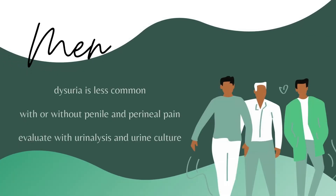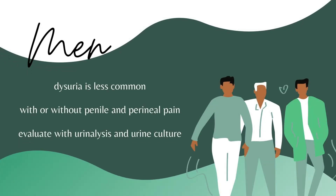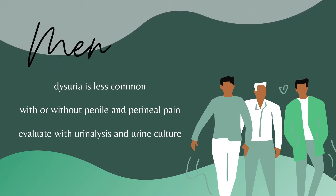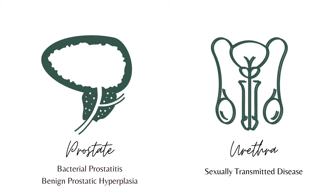In men, dysuria is less common and it occurs with or without penile and perineal pain. Routine lab tests include urinalysis and urine culture. Etiologies of dysuria in men usually affect either the prostate or the urethra.